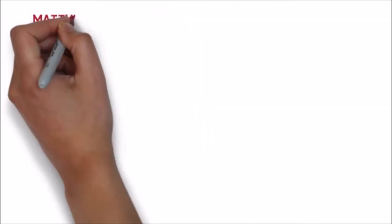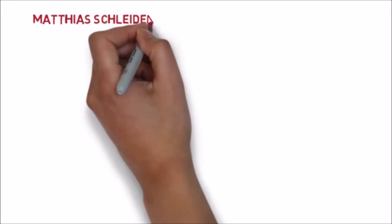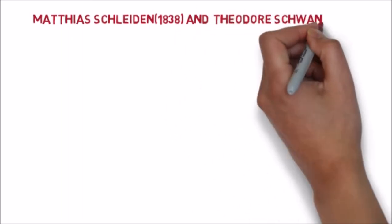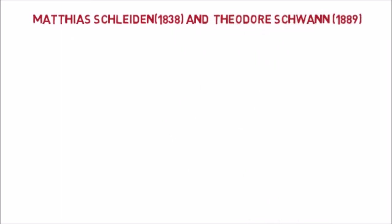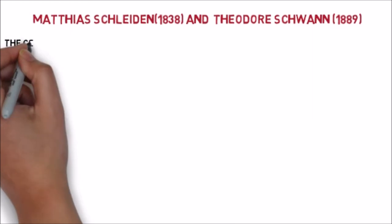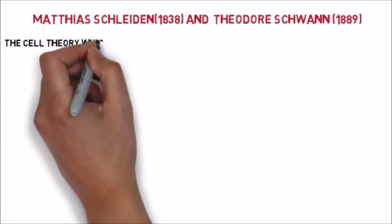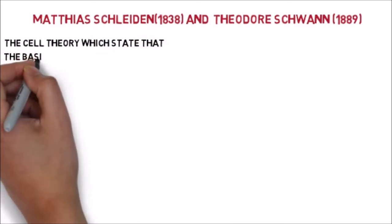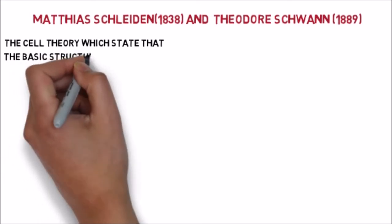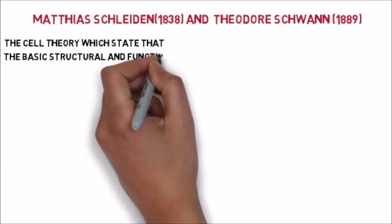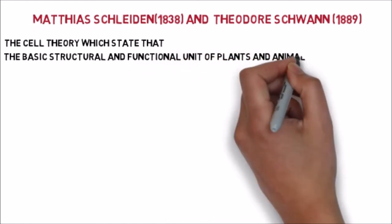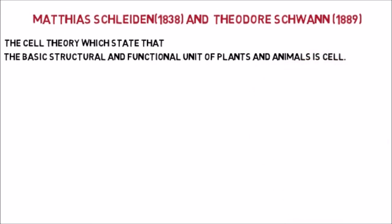After that, basic information about the cell came from the discoveries of Schleiden and Schwann. They conducted many experiments on plant cells and animal cells, and from their observations they stated the cell theory. All their observations were published under the name 'cell theory'. According to cell theory, Schleiden and Schwann stated that every animal and plant is made up of cells, and the basic fundamental structure of every living organism is the cell.